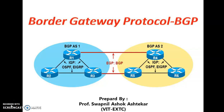Hello students. Today I have prepared a video on a topic called BGP, Border Gateway Protocol. It is the only protocol responsible for exterior gateway protocol. Whenever two routers of different autonomous systems want to communicate among themselves, BGP is the only routing protocol. If you talk about IGP, Interior Gateway Protocol, we have already discussed RIP and OSPF. Today we are going to talk about Border Gateway Protocol, treated as EGP, which is exterior gateway protocol.